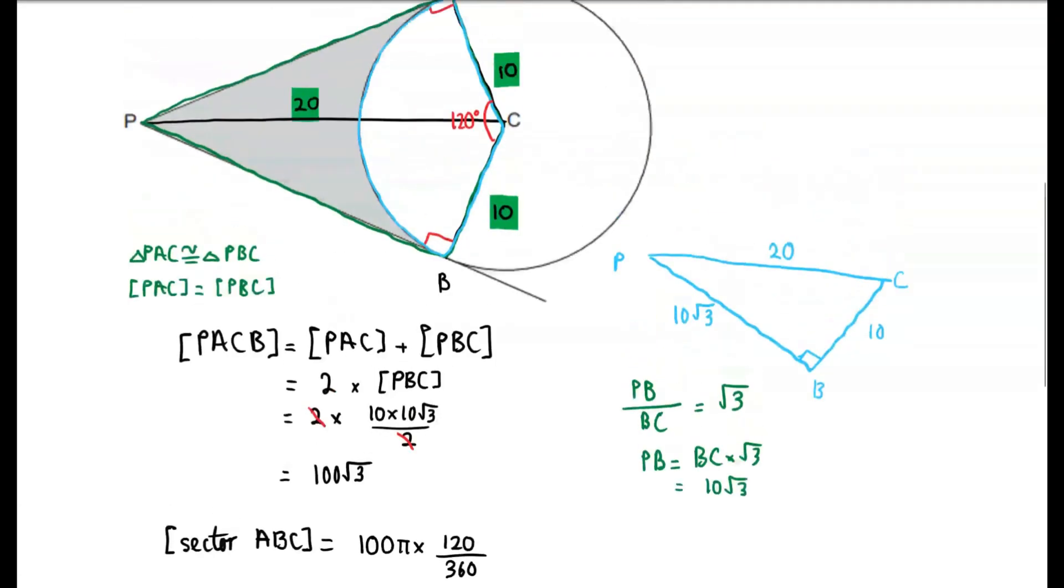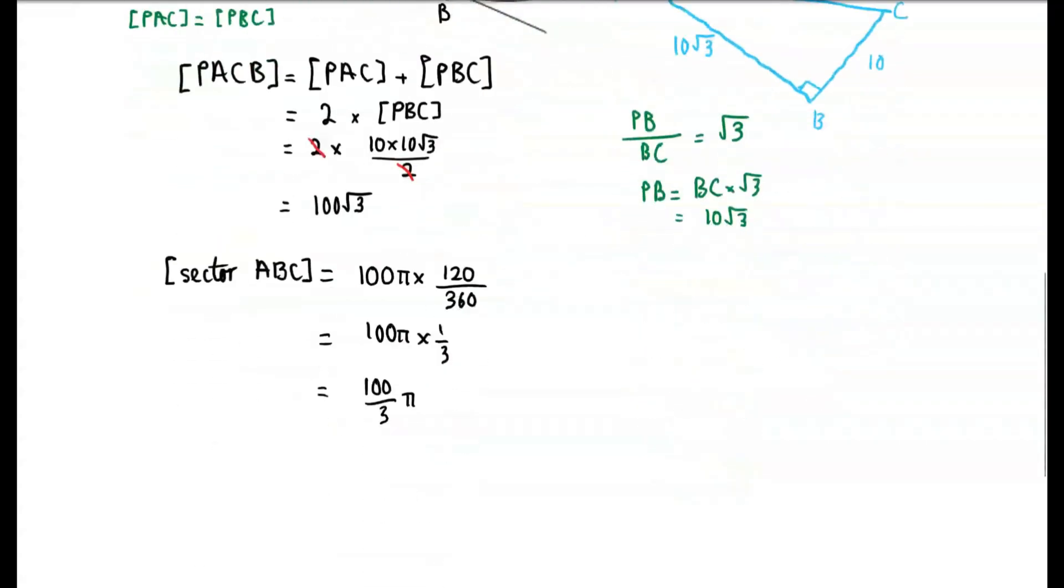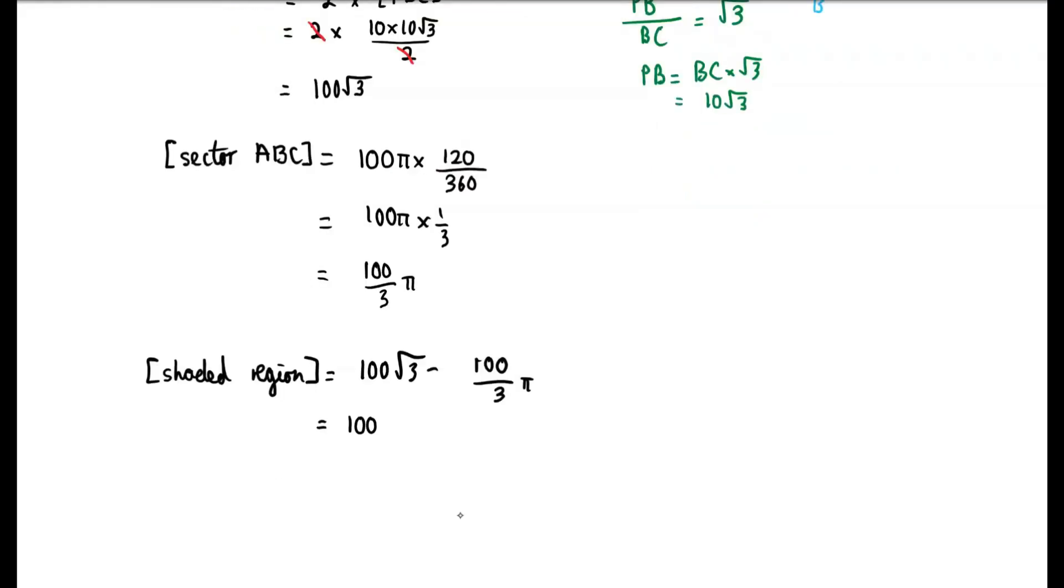Now, like we said at the start, the area of the shaded region is the area of quadrilateral PACB minus sector ABC. So the area of the shaded region is 100 root 3 minus 100 over 3 pi. So from this, we can factor out 100 over 3 to get 100 over 3 multiplied by 3 root 3 minus pi centimetres squared. And this is our final answer.